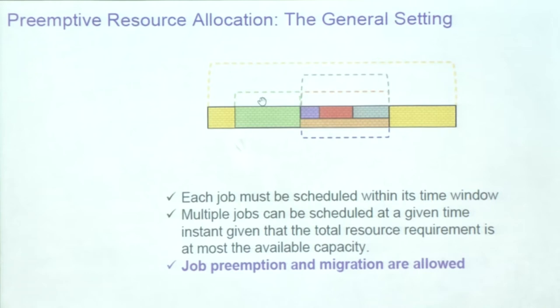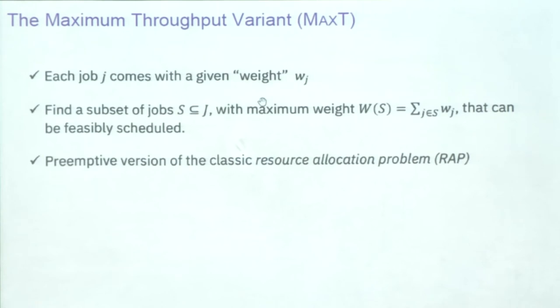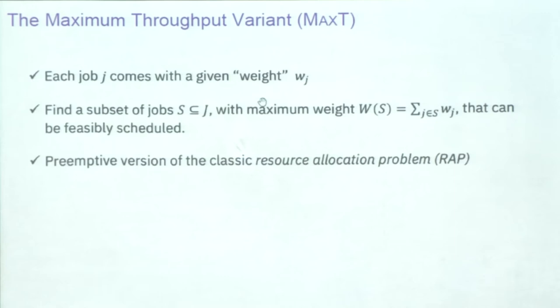The paper looks at two variants: the maximum throughput variant and the machine minimization variant. Throughout the talk, I'll only be focusing on the first one — the maximum throughput variant. So what is it? Every job comes with a particular weight telling us how significant it is. Our machines are fixed, and our job is to feasibly schedule these jobs such that we maximize the sum of the weights of the scheduled jobs — essentially scheduling very important jobs. This is exactly the preemptive version of the classic resource allocation problem.